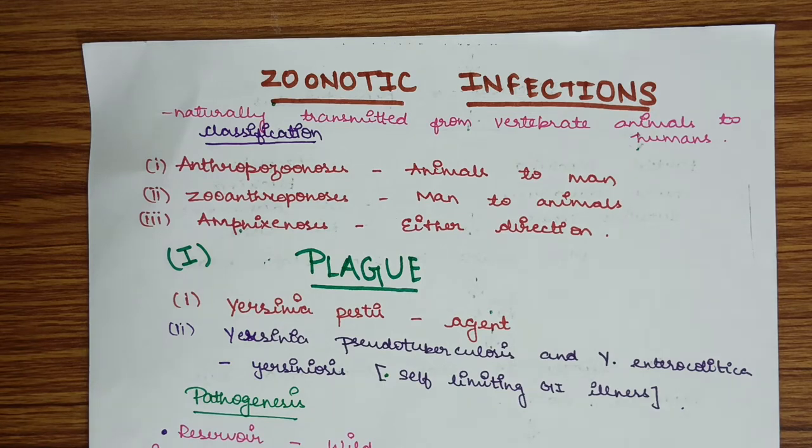They are infections which are naturally transmitted from vertebrate animals to humans. Classification: anthropozoonosis, transmitted from animals to man; zoanthroponosis, transmitted from man to animals; amphixenosis, transmitted in either direction.